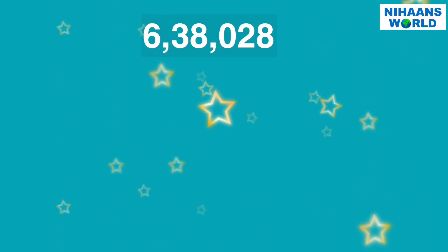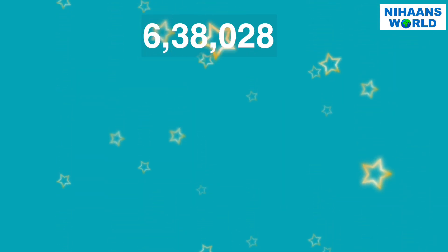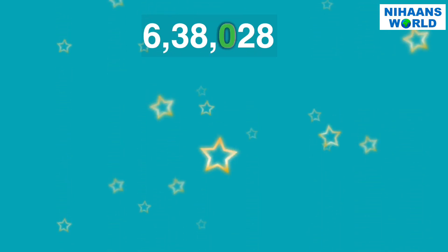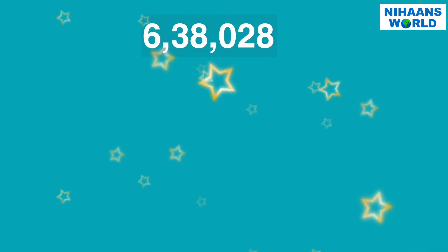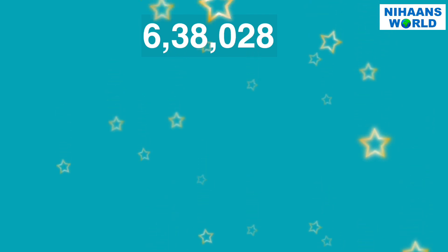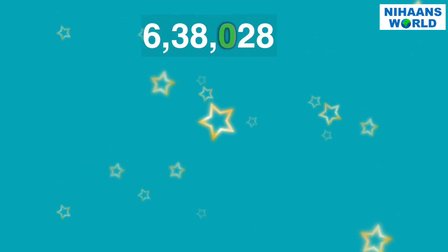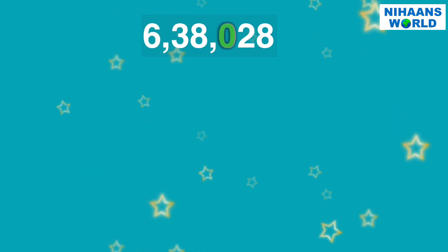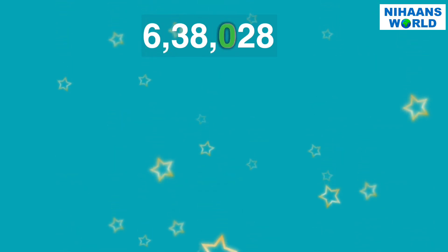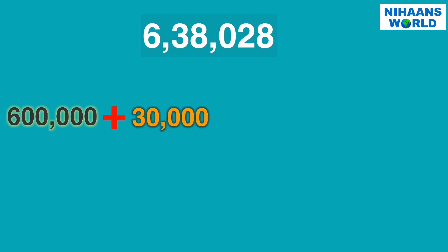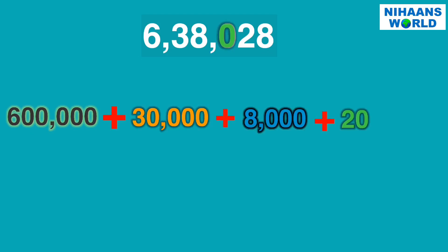One thing that we need to be careful of is when a number has a 0 in it. If you have a number like 600,038,028, you need to write plus 0 in that spot — just keep writing the other places. So 600,038,028 would look like this: 600,000 plus 30,000 plus 8,000 plus 20 plus 8.